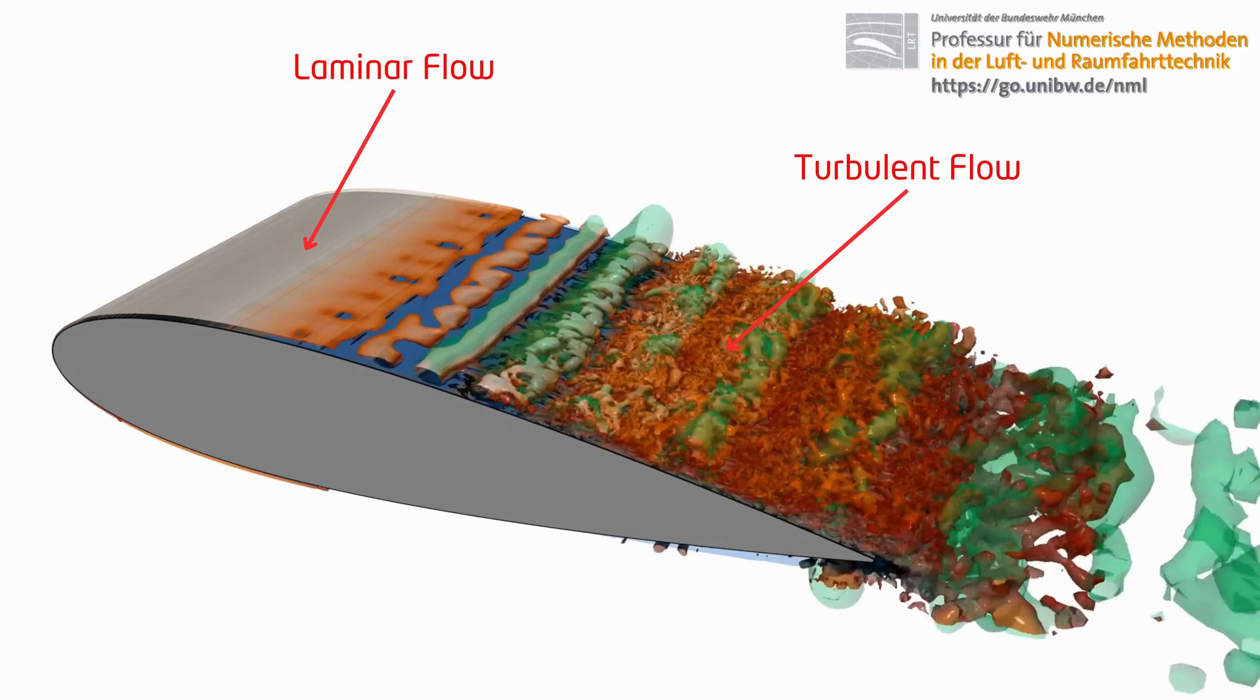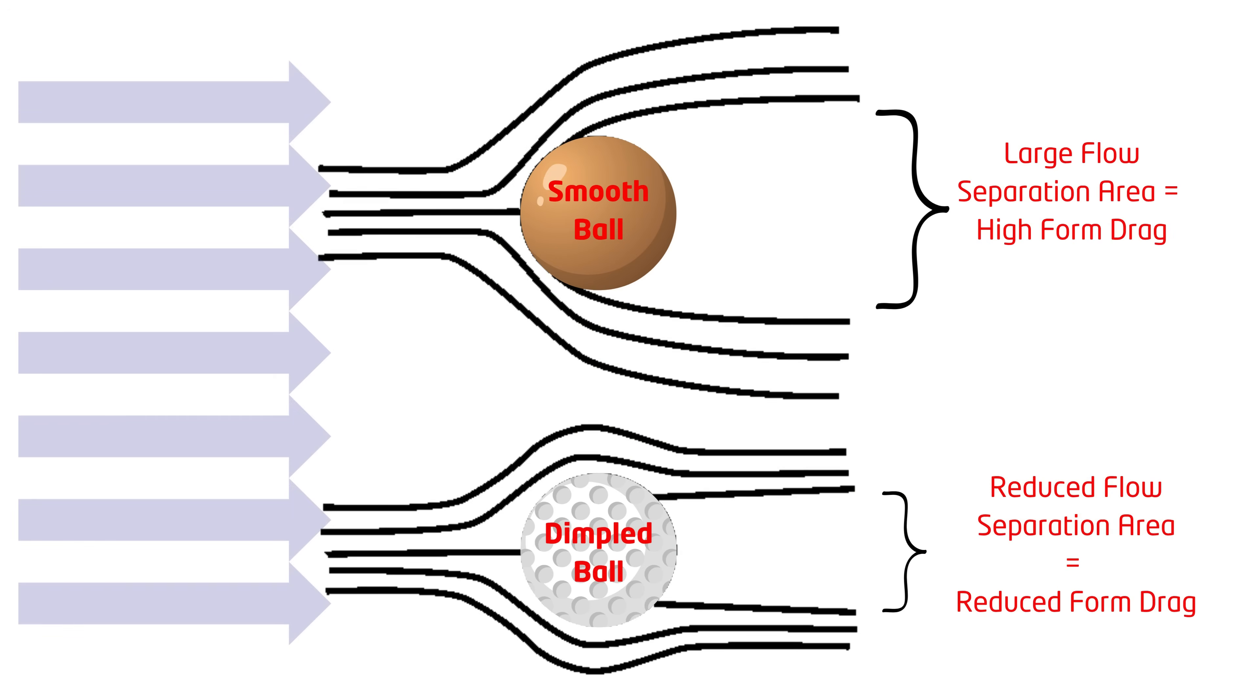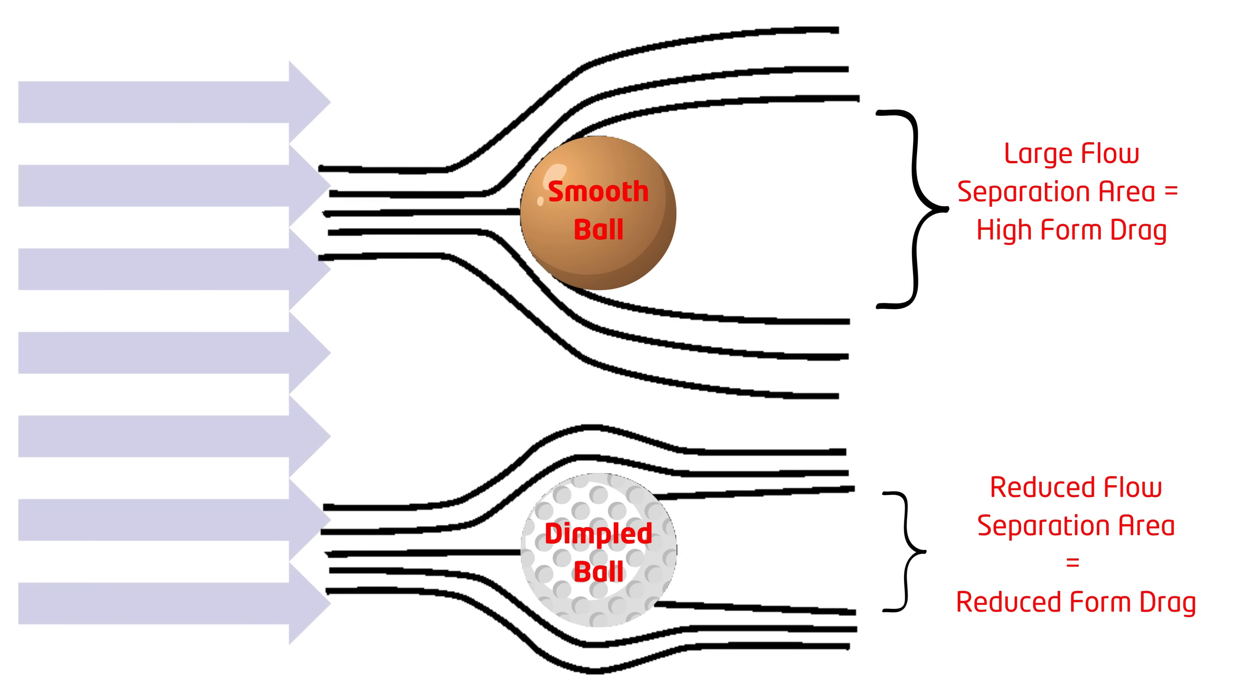However, there is also a benefit to turbulent flow. When flow is turbulent, it sticks more strongly to the surface, delaying flow separation. Therefore, although turbulence increases the skin friction drag, it can help reduce drag due to flow separation, which is called the pressure drag or form drag. For example, the dimples on a golf ball induce the flow to turn turbulent earlier, which increases the skin friction drag, but decreases the form drag by an even higher factor, thus reducing the overall drag of the ball.